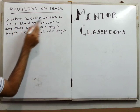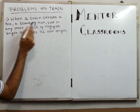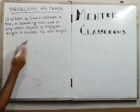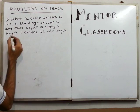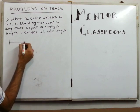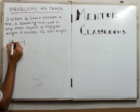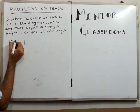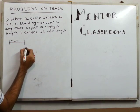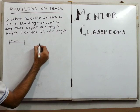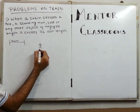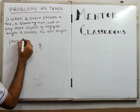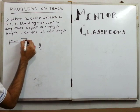The first point is: when a train crosses a pole, a standing man, a tree, or any other object of negligible length, it crosses its own length. Let's see how. Suppose this is our train, and here is a man who is standing. The train is approaching towards this man.